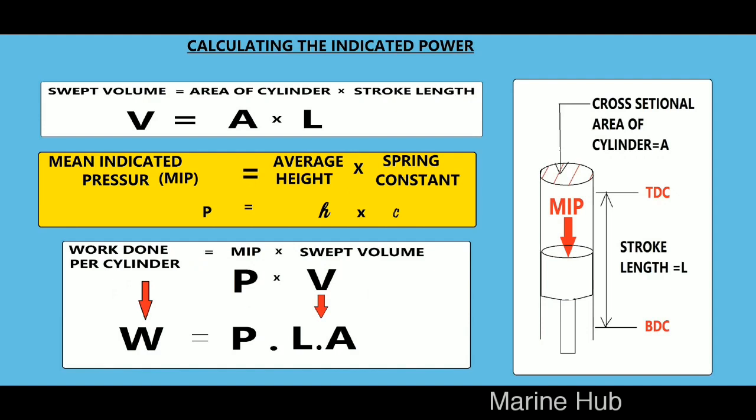Now the mean height can be converted into pressure by multiplying with spring constant. This is known as mean indicated pressure, so this represents the mean value of pressure during power stroke.